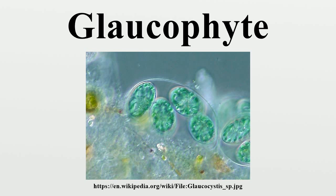The chloroplasts of Glaucophytes are known as Cyanels or Cyanoplasts. Unlike the chloroplasts in other organisms, they have a peptidoglycan layer, believed to be a relic of the endosymbiotic origin of plastids from cyanobacteria.